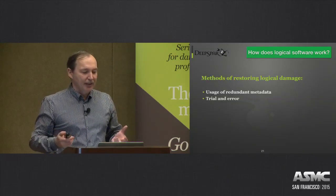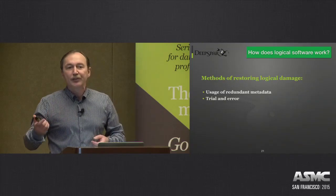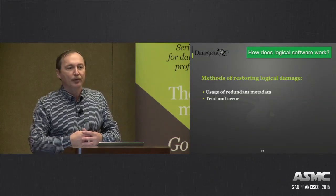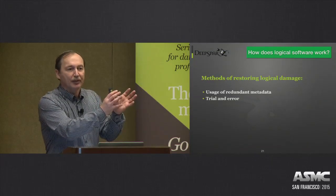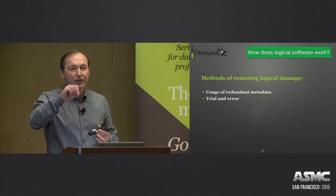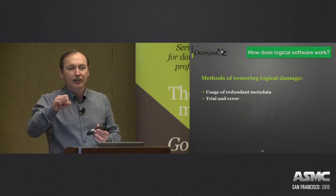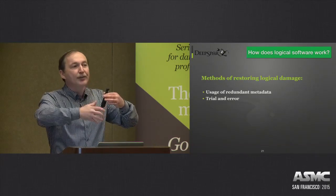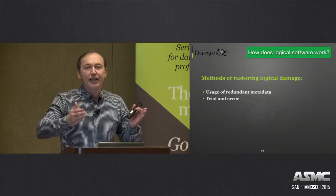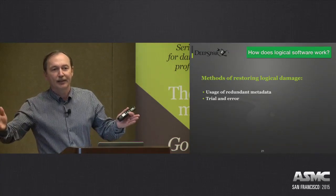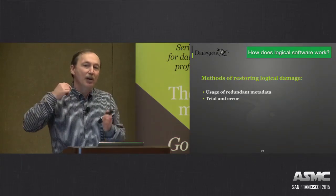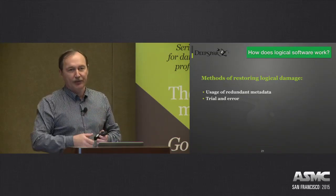If there is no redundant metadata, then it's basically trial and error. For instance, if cluster size is not known — so cluster size in Boot Sector was corrupted — the data recovery software will just try all possible sizes of cluster for this file system, and see if it gives you access to files. It will try 4K sector size, 8K sector size, and so on, seeing if it can get access assuming that cluster size.